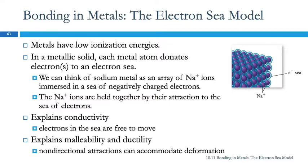Back to the electron sea model. Metals have low ionization energies, and so the electrons are fairly easy to be removed from an individual atom, which forms ions.